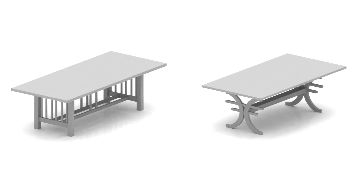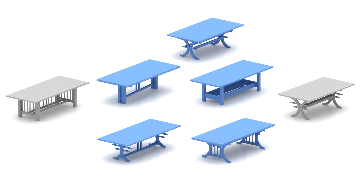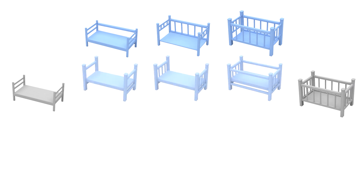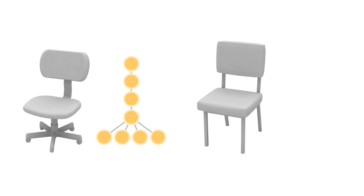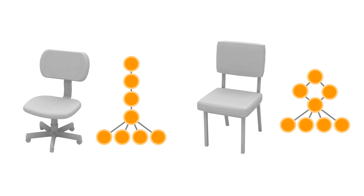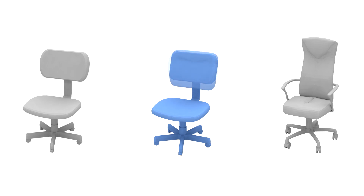We propose an algorithm and a modeling tool for blending two 3D shapes which may differ significantly in their topology. Our goal is to create novel and plausible 3D shapes via topology-varying shape blending. Our blending algorithm is structure-oriented, which allows for topology blending. It is also part-aware, allowing for geometry morph between corresponding parts.